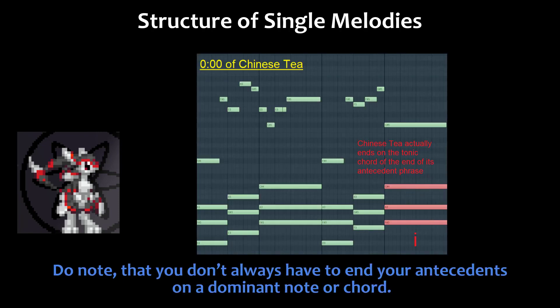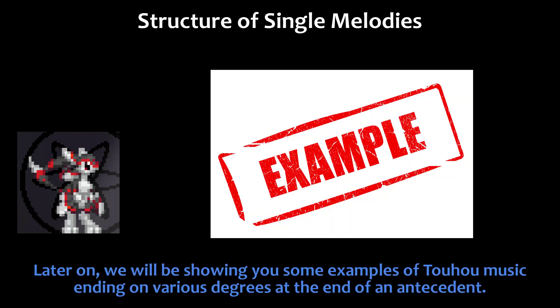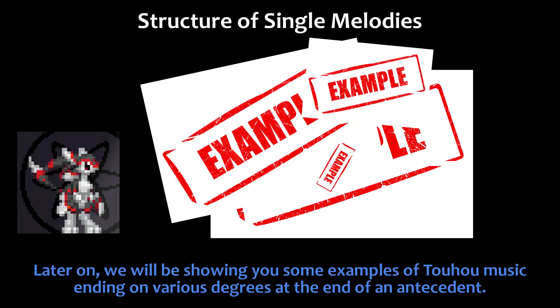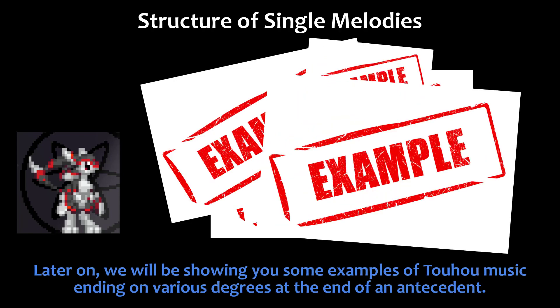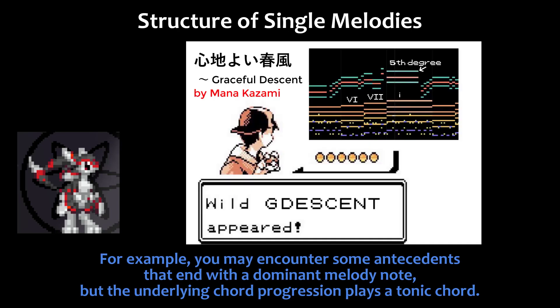Do note that you don't always have to end your antecedents on a dominant note or chord. Later on, we will be showing you some examples of Touhou music ending on various degrees at the end of an antecedent. For example, you may encounter some antecedents that end with a dominant melody note, but the underlying chord progression plays a tonic chord.